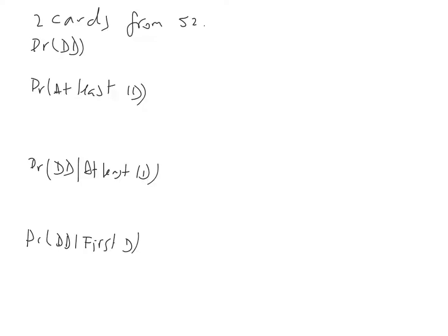For our last video on conditional probability, we're doing a slightly more complicated example where we're looking at cards being taken from a deck of 52. We're looking at two cards being taken from 52, and we're interested in every question about diamonds. The first thing is the probability of two diamonds. The second is the probability of at least one diamond, then two diamonds given we had at least one diamond, and then the probability of two diamonds given the first one was a diamond.